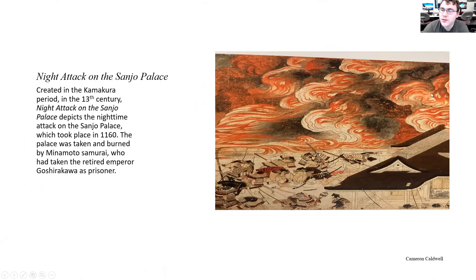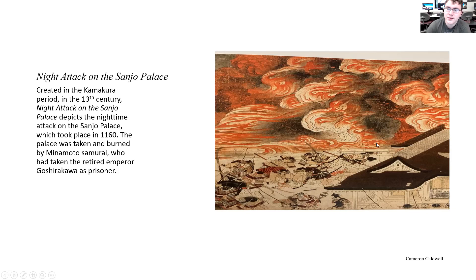In the painting, you notice mostly in the upper half bright orange flames which are burning down the palace. You can notice the vibrant shades of orange that depict the intensity of the flames, which is a major part of the entire painting. Along with the samurai warriors near the lower left area of the painting, most of which appear to be dead.